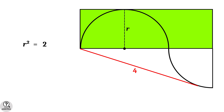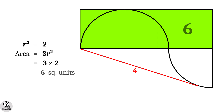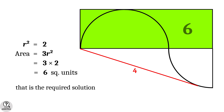We already have the area of the rectangle equal to 3R squared. Substituting R squared equal to 2, that is equal to 3 into 2, equal to 6 square units. And that is the solution we are looking for.